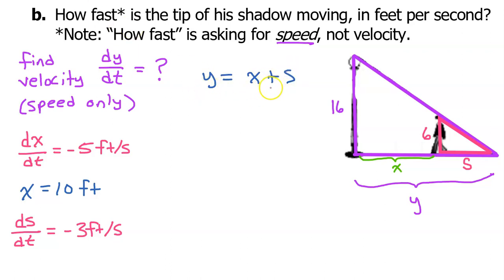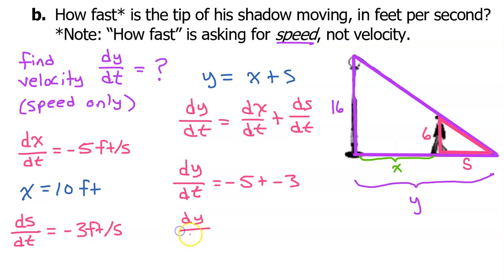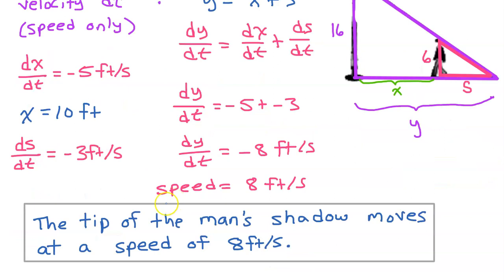Let's differentiate both sides with respect to t, so we can make dy/dt, dx/dt, and ds/dt appear. So the derivative of y is just dy/dt. And the derivative of x is dx/dt. And the derivative of s is ds/dt. But we know that dx/dt is negative 5, while ds/dt is negative 3. So that means that dy/dt is negative 8 feet per second. Since we want the speed, we will call it 8 feet per second. In AP Calculus, you should always summarize your answer with a complete sentence. So the tip of the man's shadow moves at a speed of 8 feet per second.